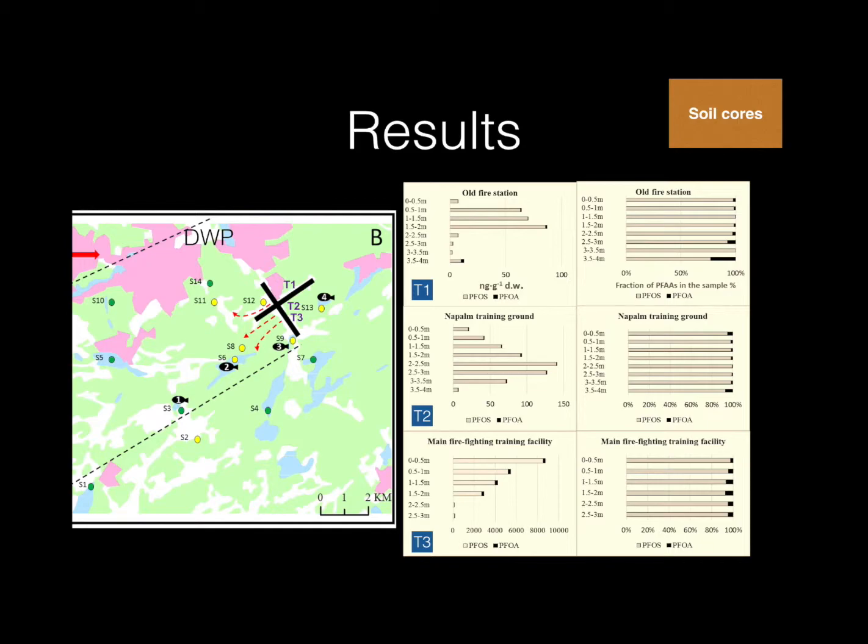If we look to the figure to the right, we can see on the y-axis is the sampling depth. And on the x-axis, we have either the concentrations in nanogram per gram dry weight or the fraction of PFAs in the sampling percent. What we see here is if we take T3 for an example, this site has been most recently used. And therefore, we find the highest concentrations of PFAs in the top soil, and the concentrations are decreasing further down.